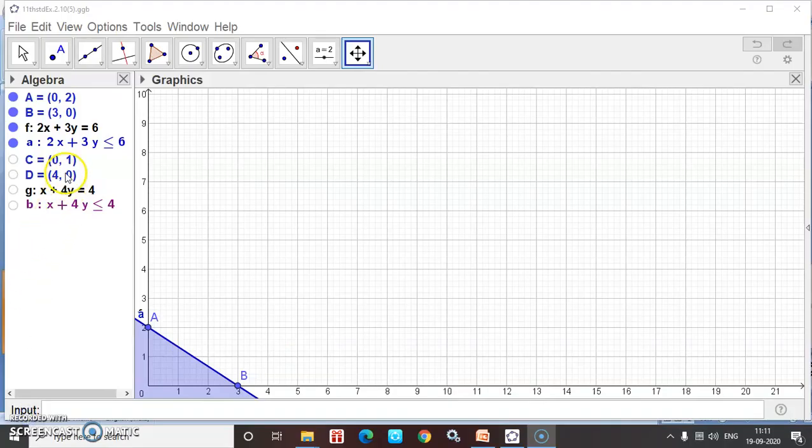Before plotting my (0,1) and (4,0), this is my x plus 4y equals 4. This is the equation.